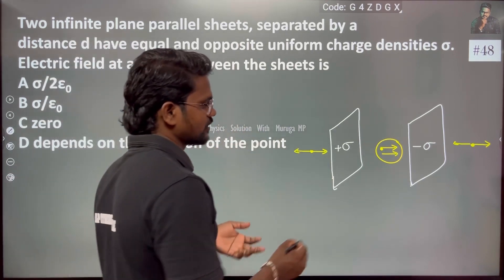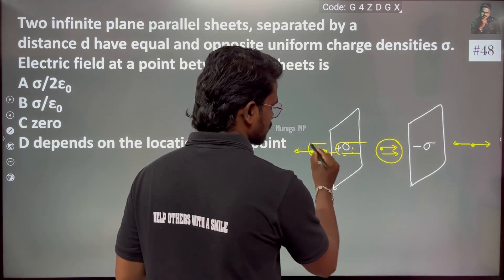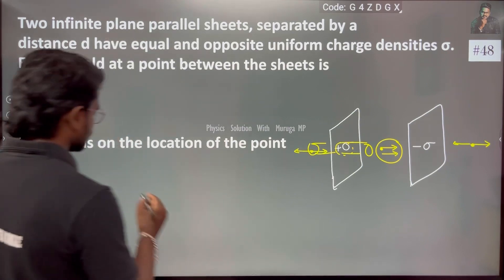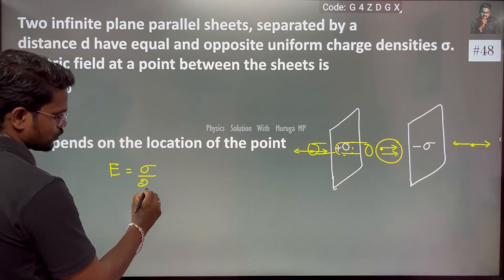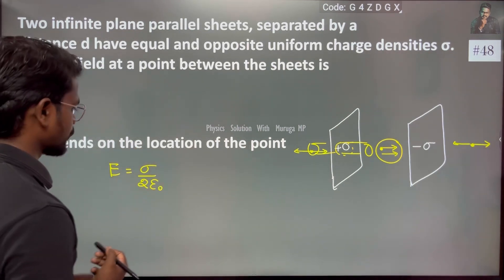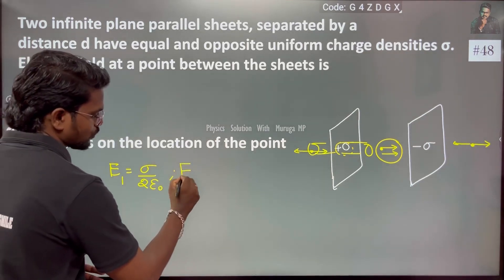We took some imaginary loop, so we found electric field in a single sheet. The electric field which is equal to sigma by 2ε₀. Let us say this is E1, E2 from the second sheet.